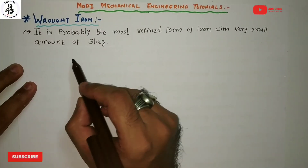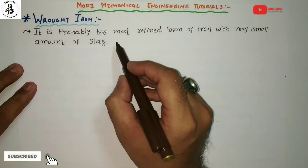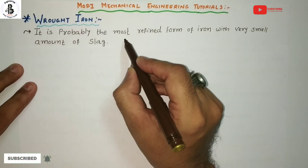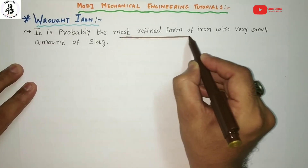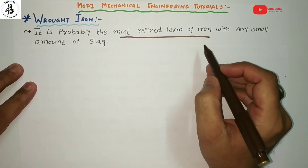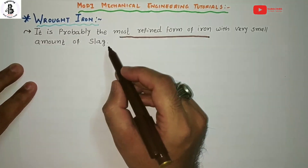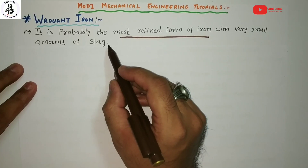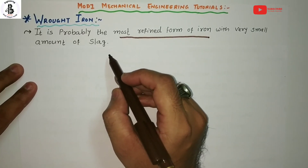Wrought iron is probably the most refined form of iron. A very small amount of slag is present in wrought irons.